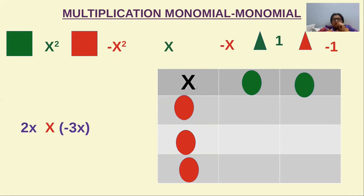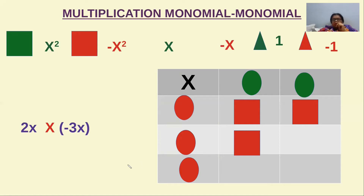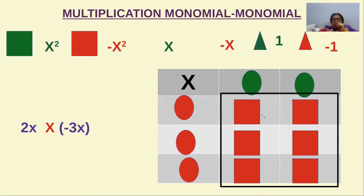Now we perform the multiplication. Minus x into plus x gives minus x². We place the red colored square flashcard in each box. Each cell gives minus x², and counting all six cells we get 1, 2, 3, 4, 5, 6 minus x² cards. So the answer is minus 6x². This is the activity method.